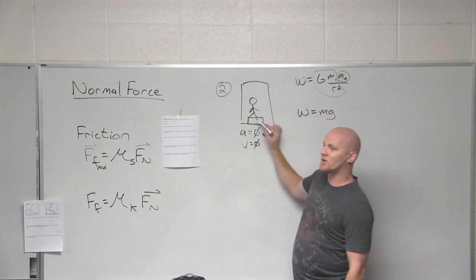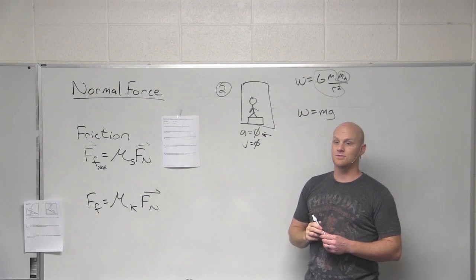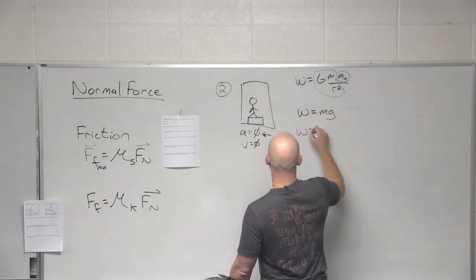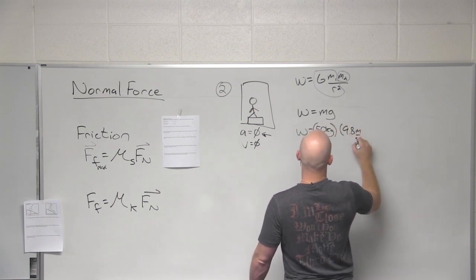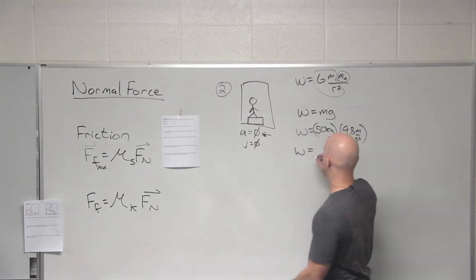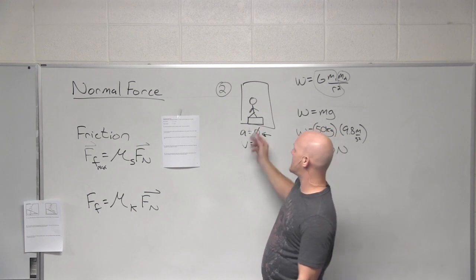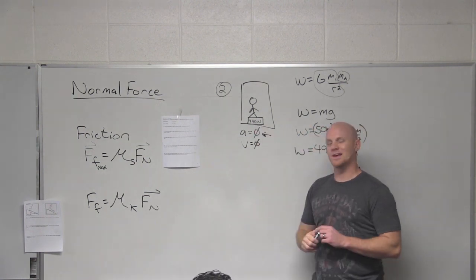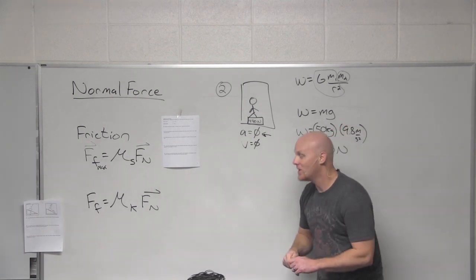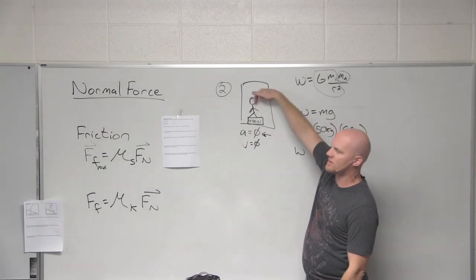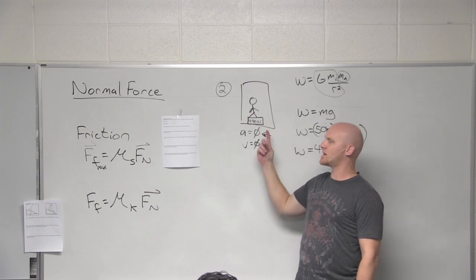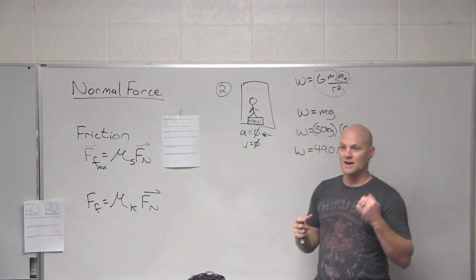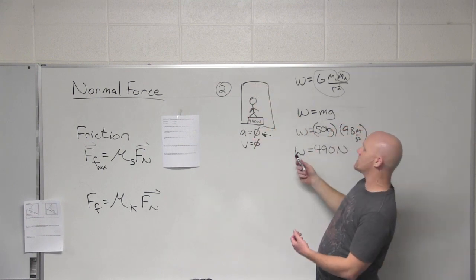The question is, what does this scale read? The scale reads her weight, which will be in Newtons. And that is indeed what the scale reads — 490 Newtons. What force is the scale really reading? The scale applies a normal force to her, so the scale reads normal force. In this case, the normal force equals her weight, which is why we solved for her weight and got the normal force. That's not always going to be the case.